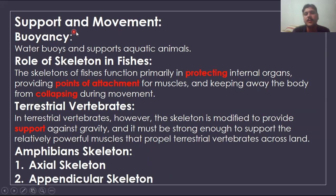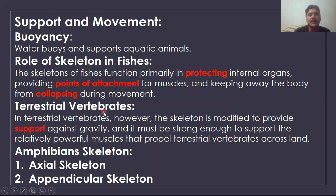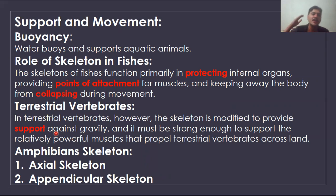The next topic is support and movement. Support means resistance against gravity. In aquatic habitats it is related to buoyancy, which allows animals to move easily in water. The skeleton has many roles: it provides protection, serves as the point of attachment for muscles, and the vertebral column prevents the body from collapsing. In terrestrial vertebrates such as amphibians, reptiles, birds, and mammals, the skeleton provides resistance against gravity.